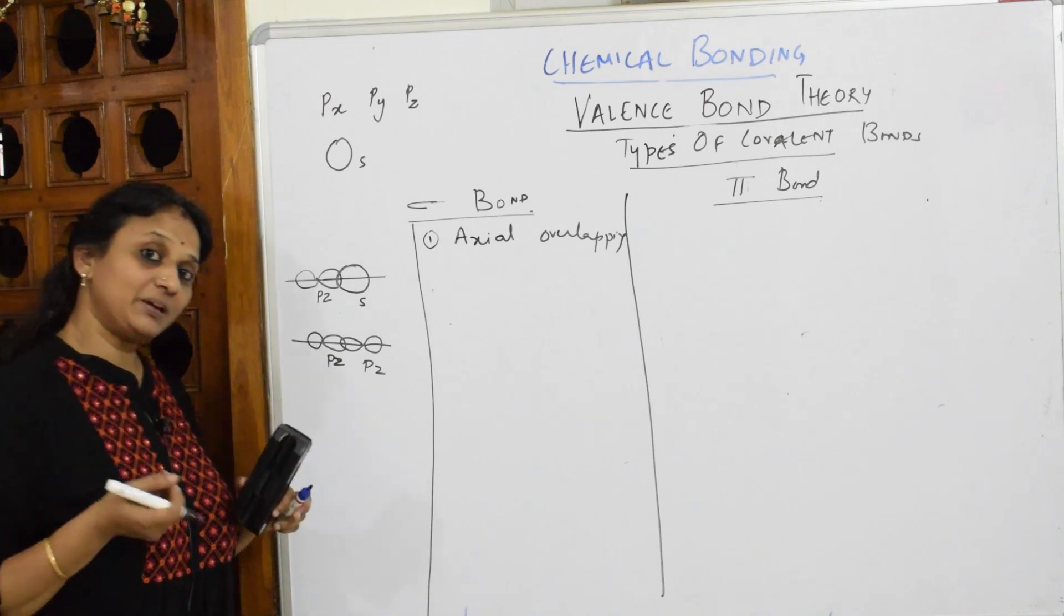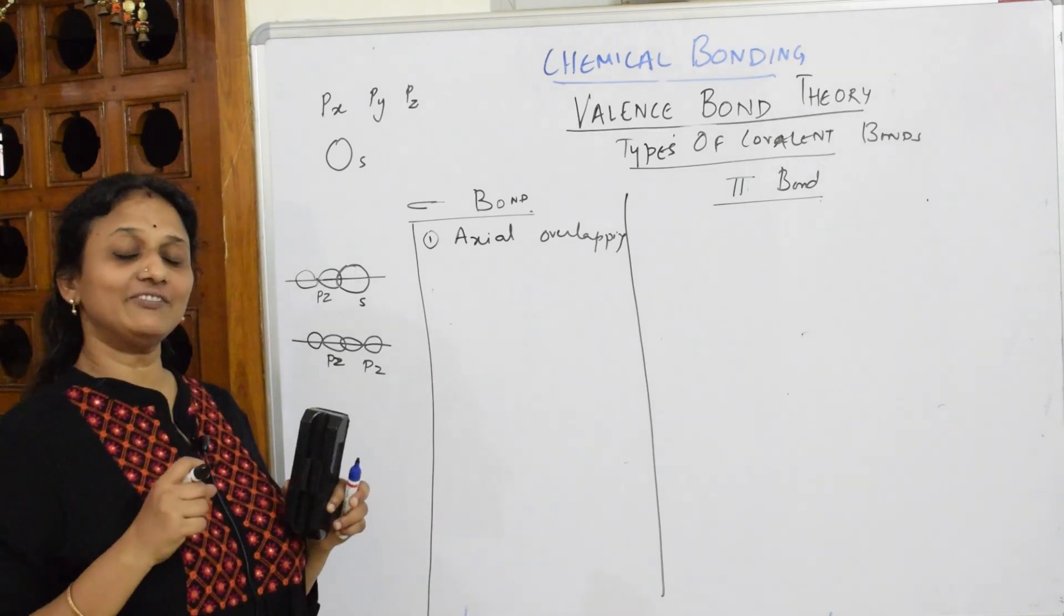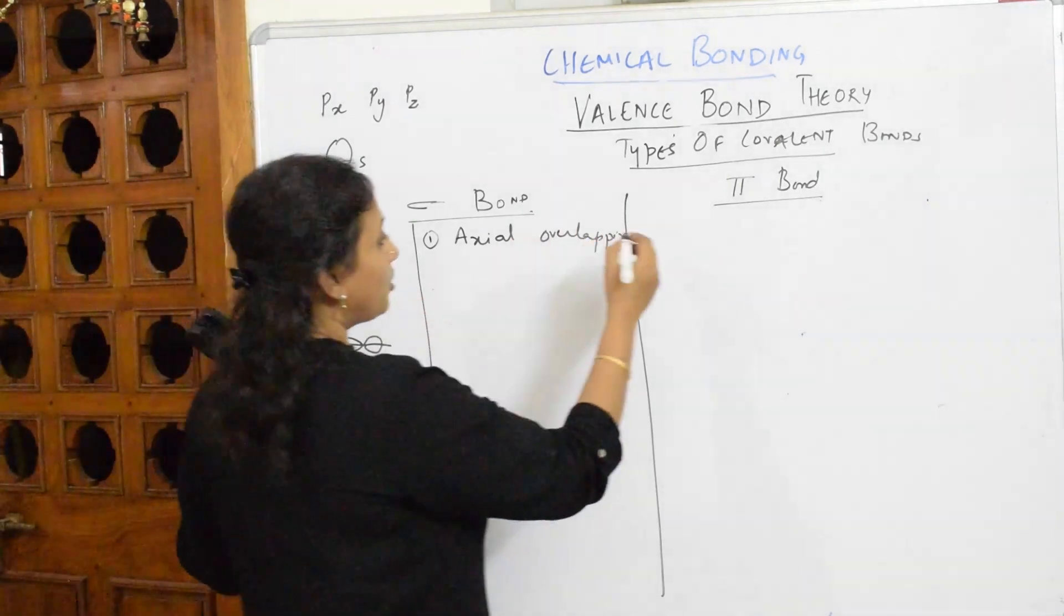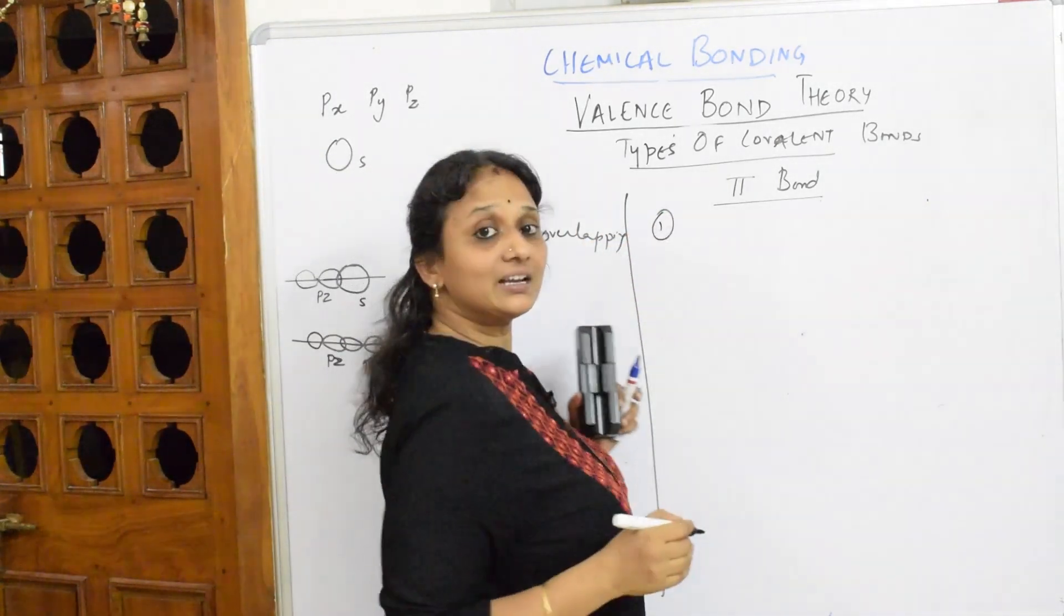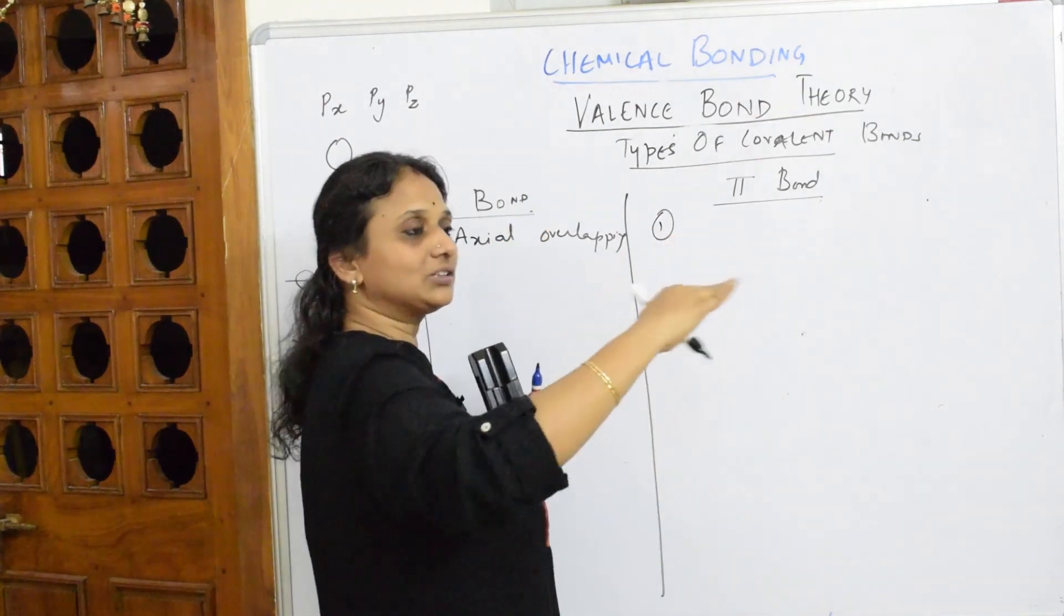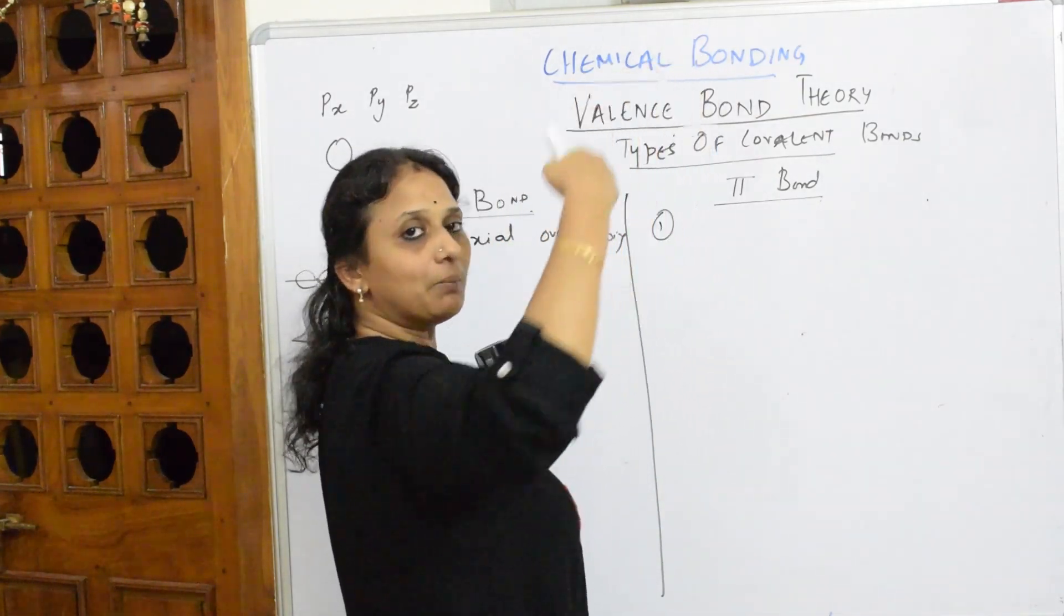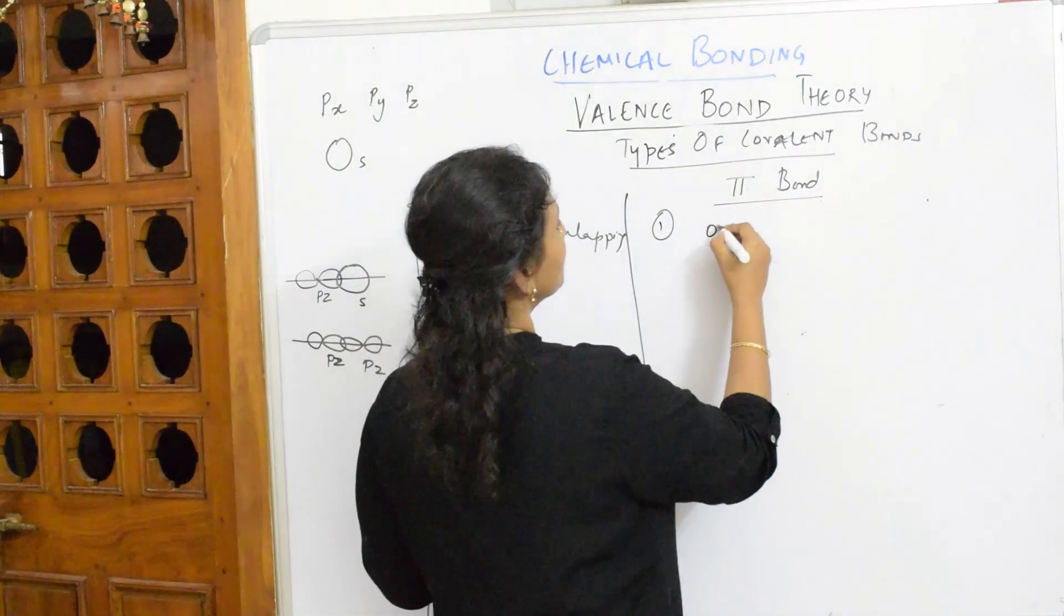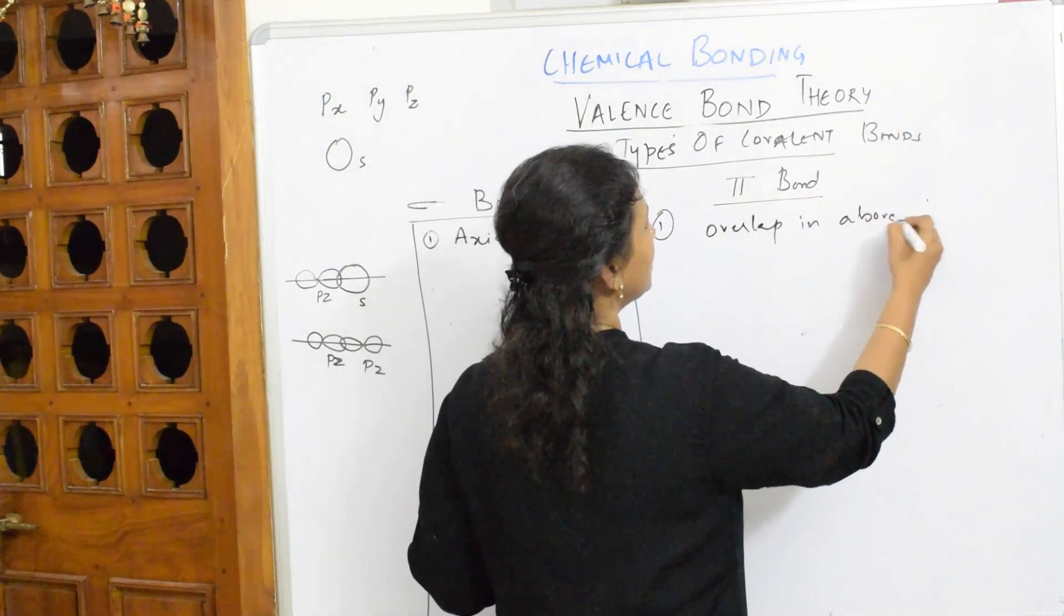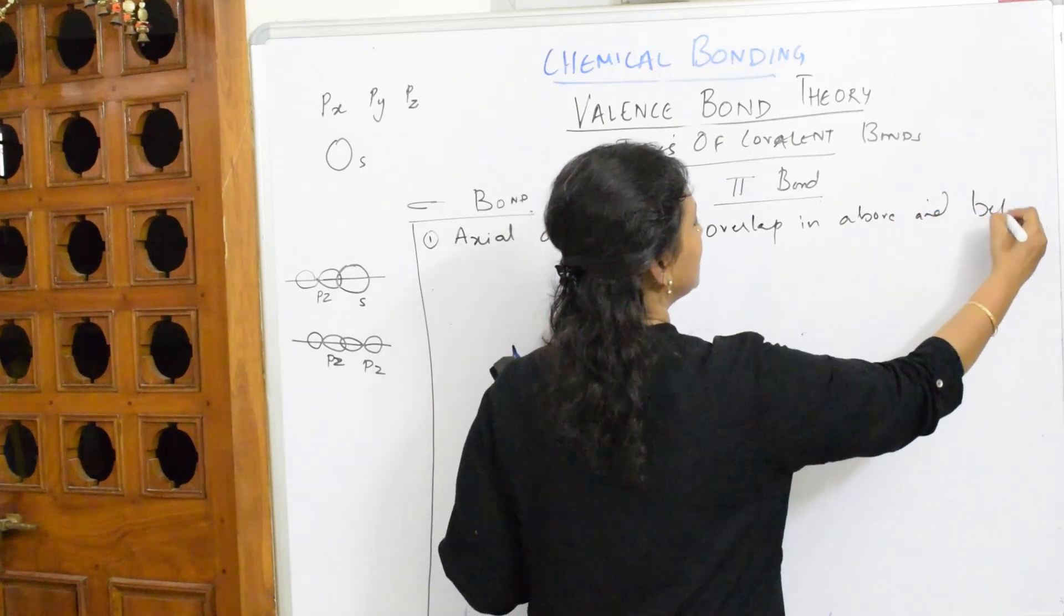Now, py and py, is it sigma? Let us see whether it is sigma or not. Pi bond is a type of bond where they are going to overlap. The overlap here is along the axis. Here they have to overlap above and below. So the overlap is above and below.